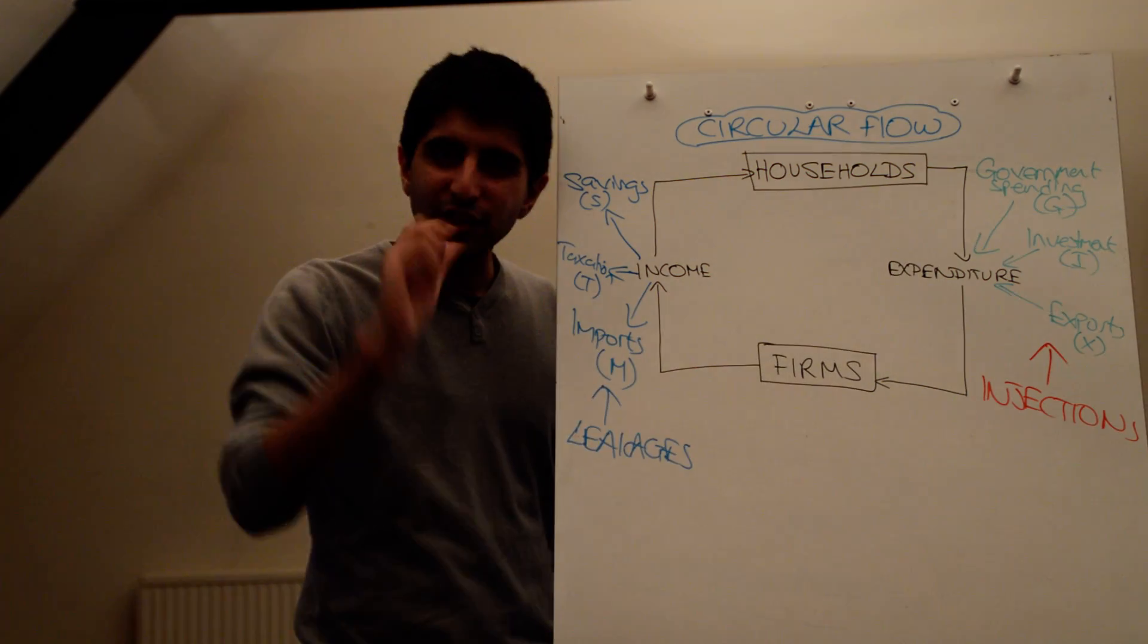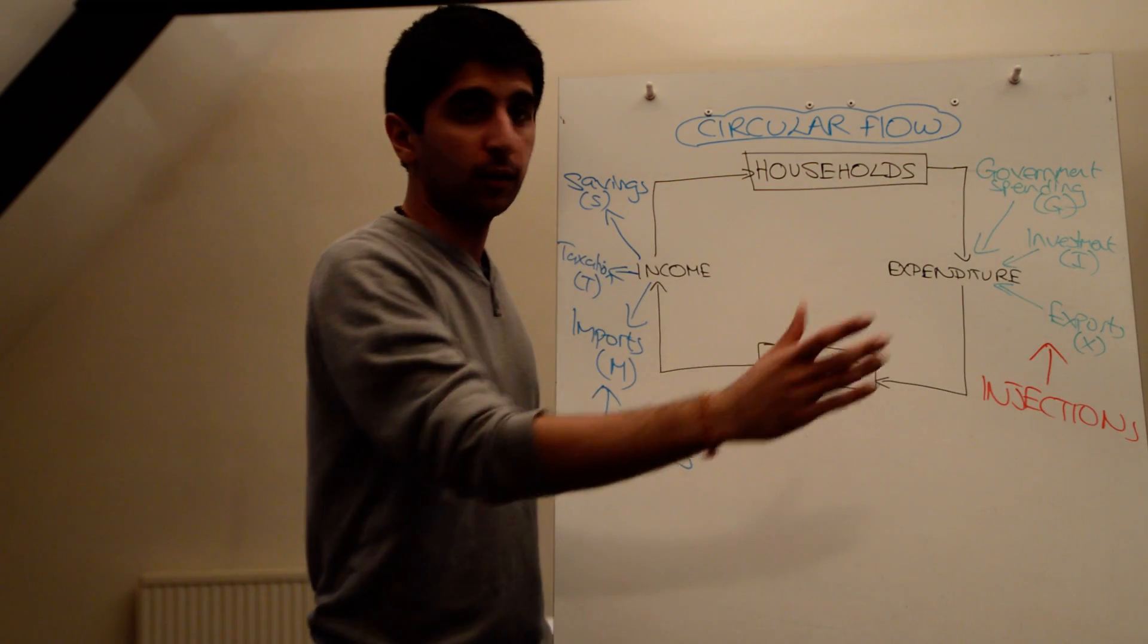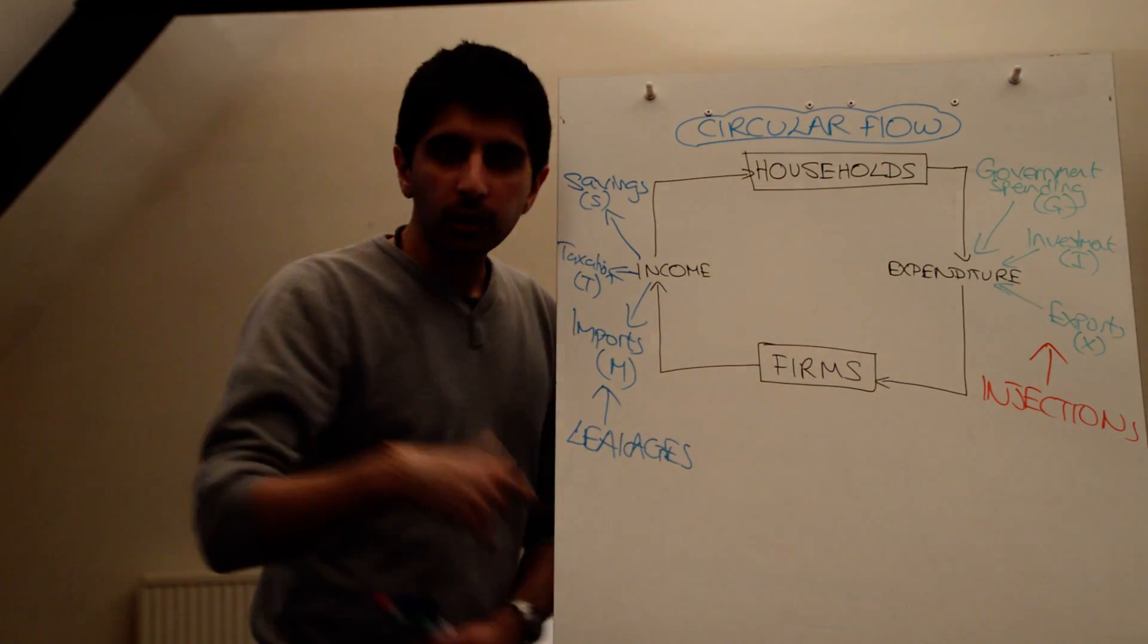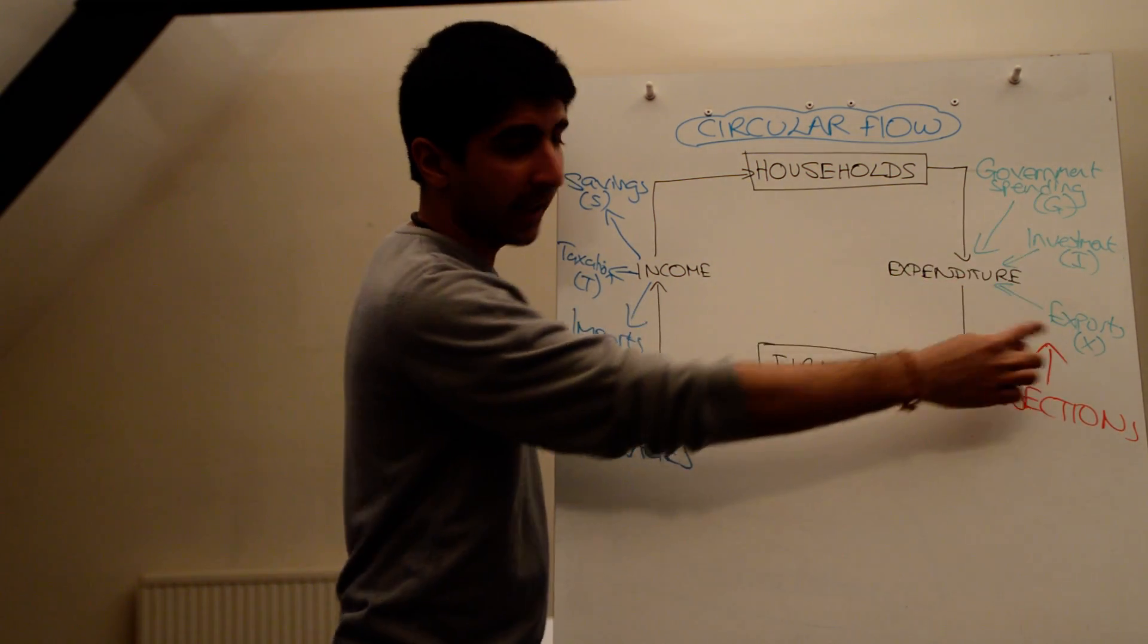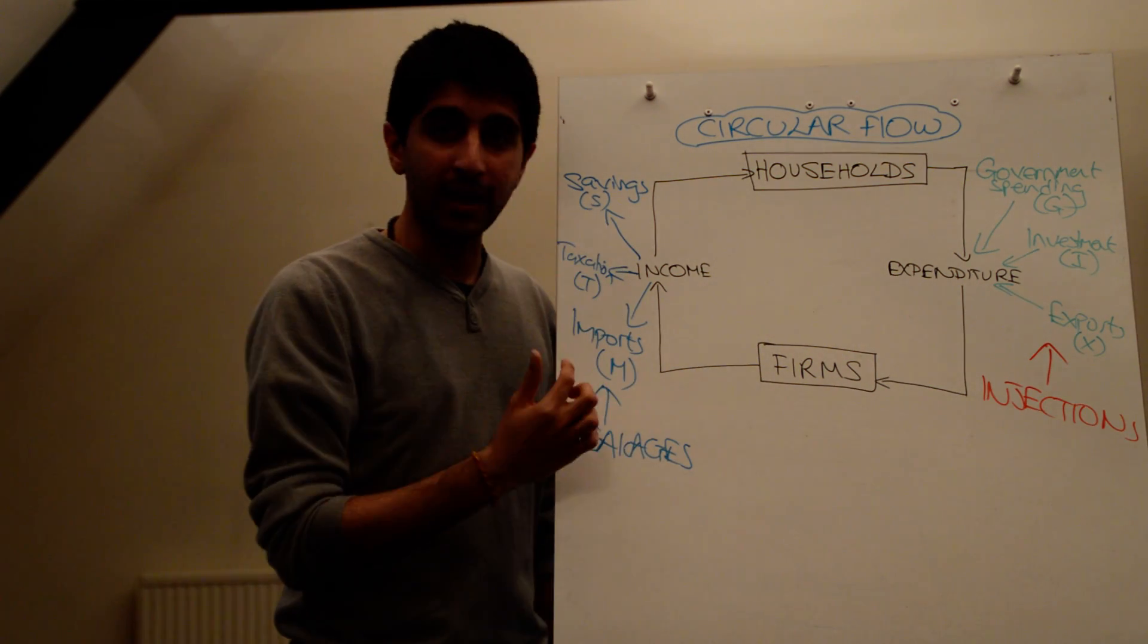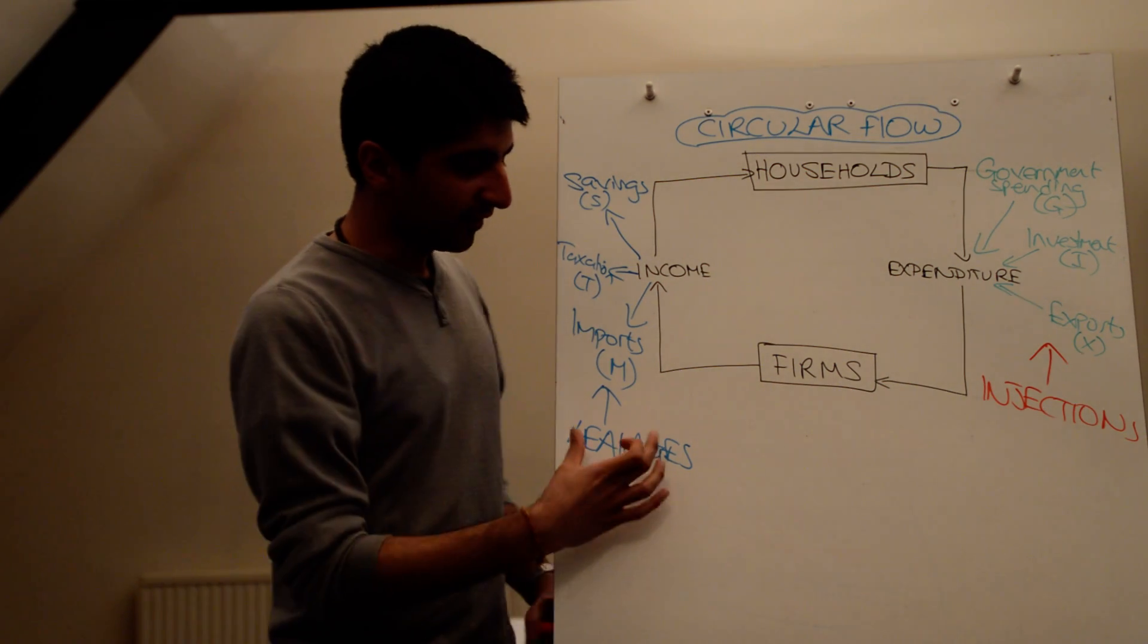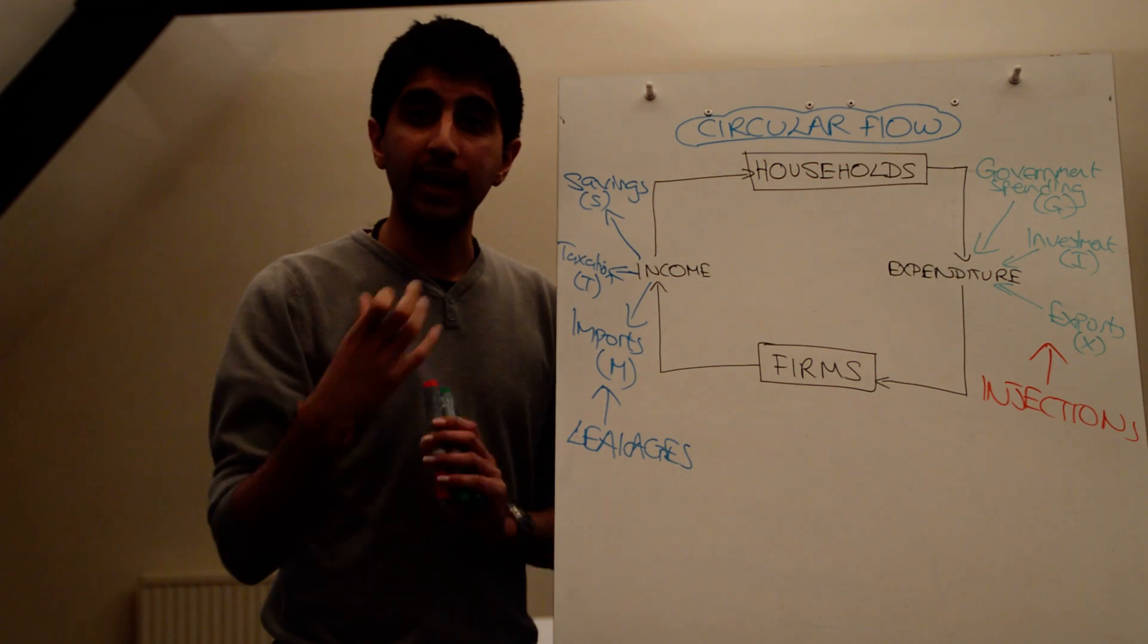Consumer expenditure is not an injection, it's an actual part of the flow, whereas these three things are external, which is why they're injections. What you need to know here is how can we get an idea of growth? Well, if injections, G plus I plus X, are more than leakages, S plus T plus M, there will be economic growth in the economy. Whereas if leakages were more than injections, there will be a fall in growth in the economy.